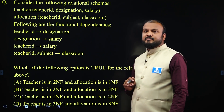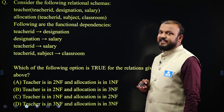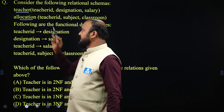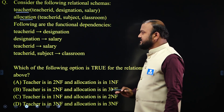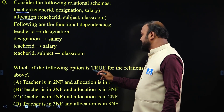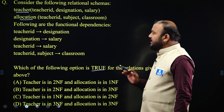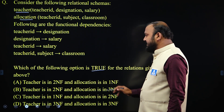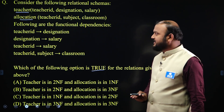Here is a question based on normal forms. Consider the following relational schema — teacher and allocation — two schemas are given. Following are the functional dependencies, and here a set of dependencies are given. Which of the following options is true for the relation given above? Options include: the relation is in 1NF, 2NF, 3NF, and so on. We have to find the normal form of the relation.